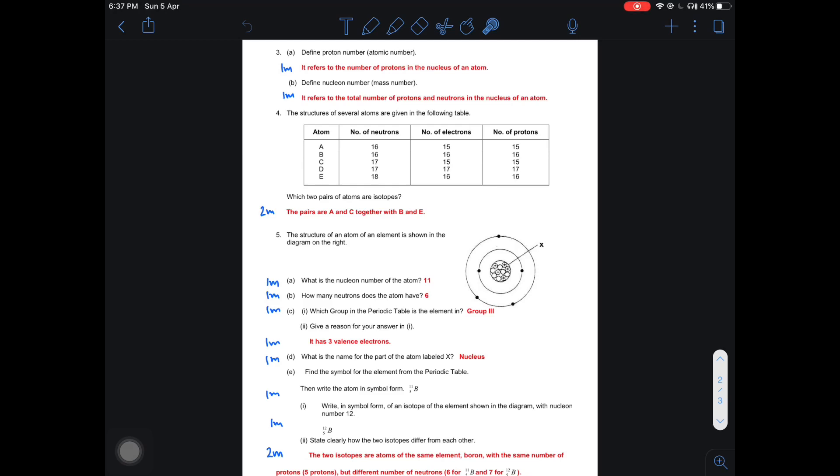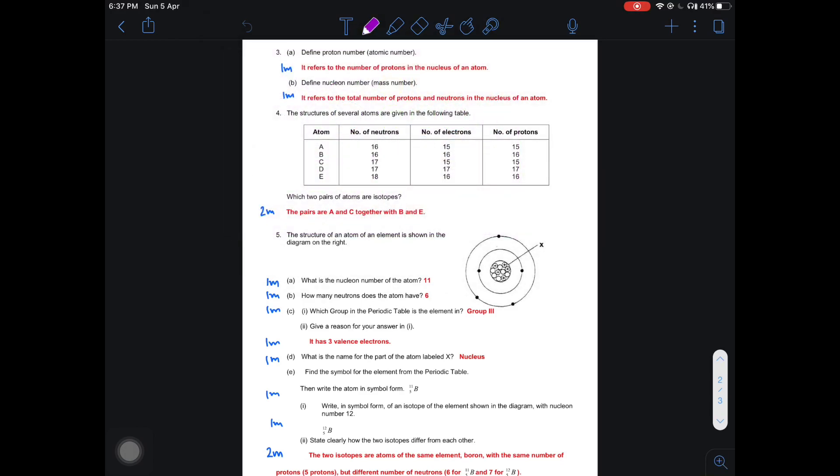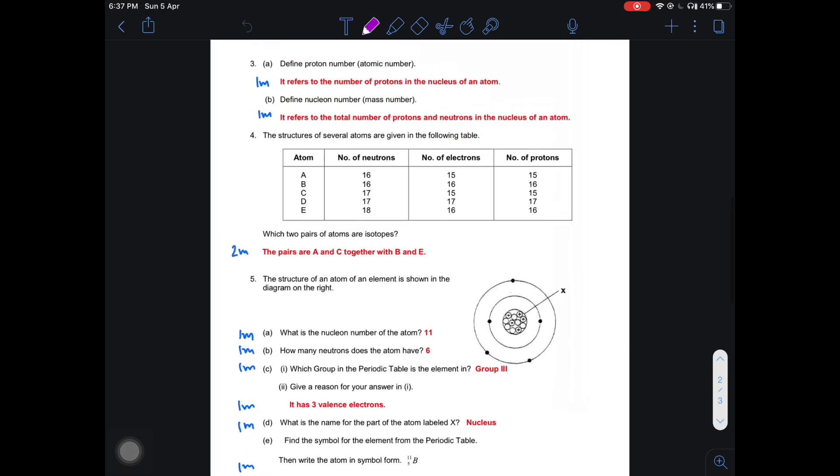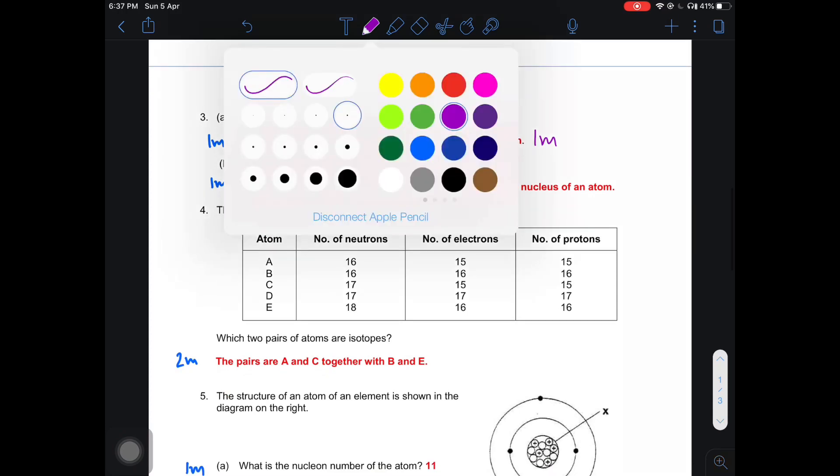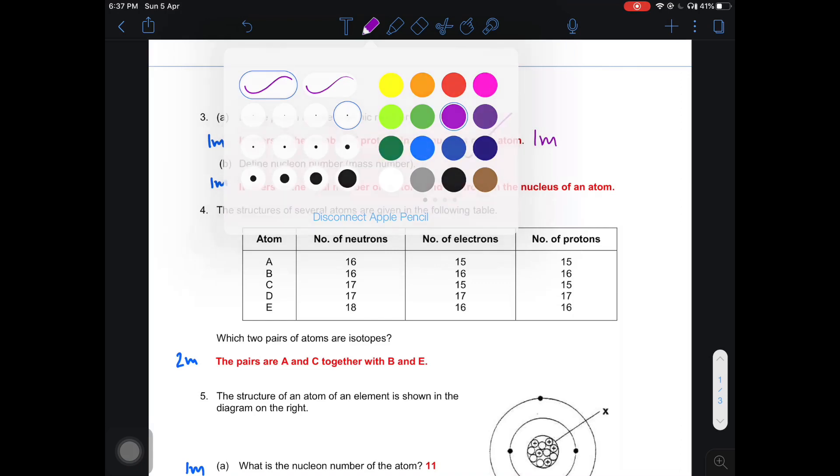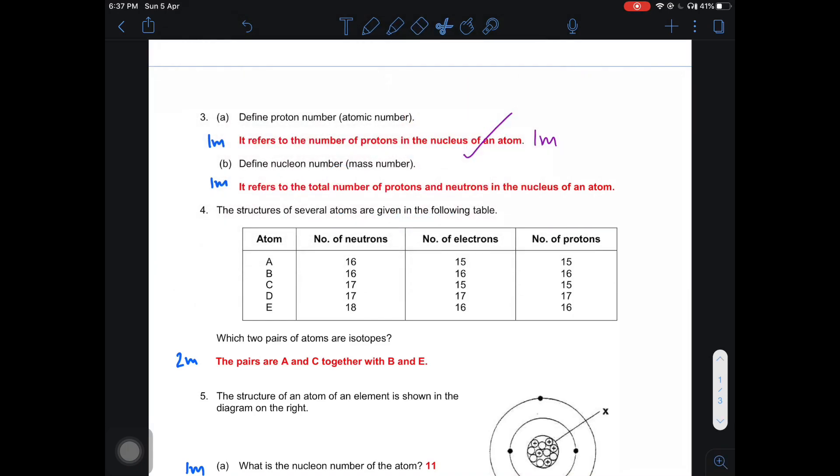Using Notability, you can do your marking. For example here, question 3, define proton number. You can do your marking on screen and write the feedback. You can choose your pen color, highlighter, you can erase, you can even cut and paste and move things around, resize it, and so on.